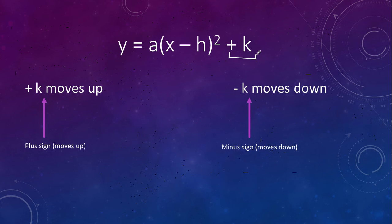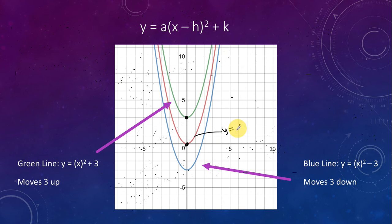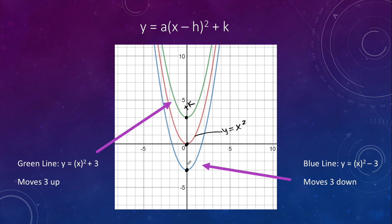The k value tells us if the graph moves up or down. A plus k means the graph moved up; a minus k means it moved down. No opposites here — plus k is up, minus k is down. The green line moved up 3 from the parent function, so the equation is y equals x squared plus 3. The blue line moved down 3, so the k value is negative 3, giving us y equals x squared minus 3.